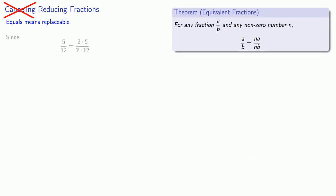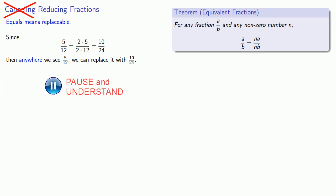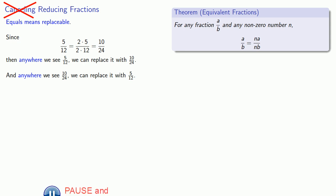Since a fraction like 5 twelfths is the same as 2 times 5 over 2 times 12, or 10 twenty-fourths, then anywhere we see 5 twelfths, we can replace it with 10 twenty-fourths. Now you might wonder why we want to do that, and the reason we might want to replace 5 twelfths with 10 twenty-fourths will show up later when we start to talk about addition and subtraction of fractions. On the other hand, the reason that we might want to replace 10 twenty-fourths with 5 twelfths is because we think size does matter, and there's something better about 5 twelfths.